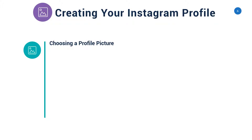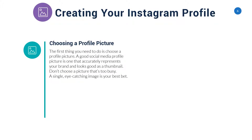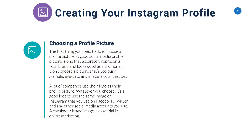Choosing a profile picture. The first thing you need to do is choose a profile picture. A good social media profile picture is one that accurately represents your brand and looks good as a thumbnail. Don't choose a picture that's too busy — a single, eye-catching image is your best bet. A lot of companies use their logo as their profile picture. Whatever you choose, it's a good idea to use the same image on Instagram that you use on Facebook, Twitter, and any other social media accounts you use. A consistent brand image is essential in online marketing.